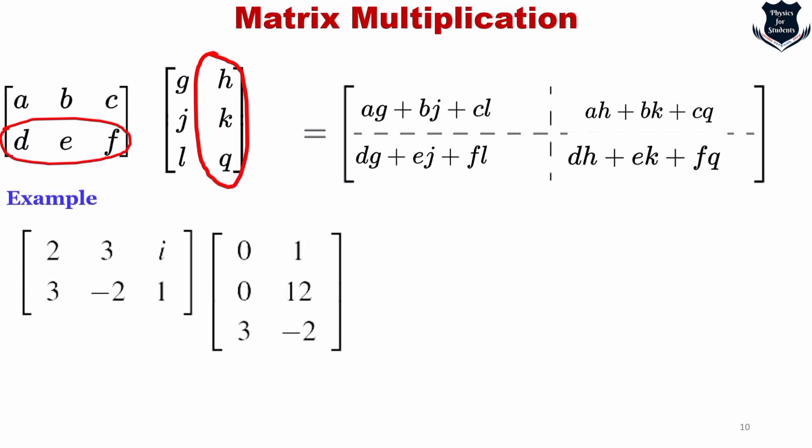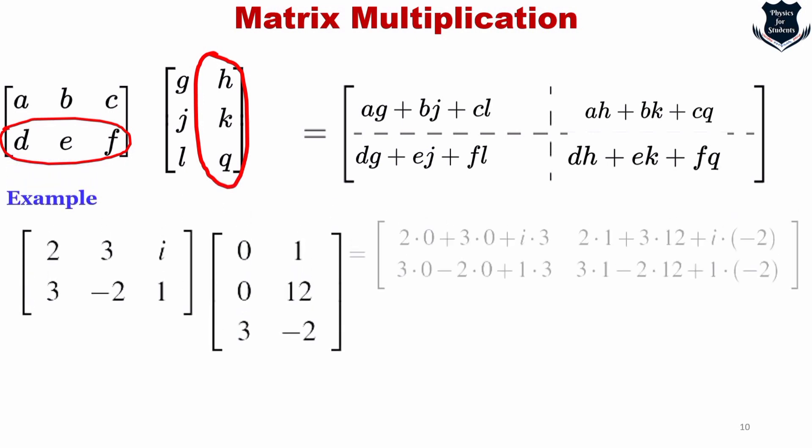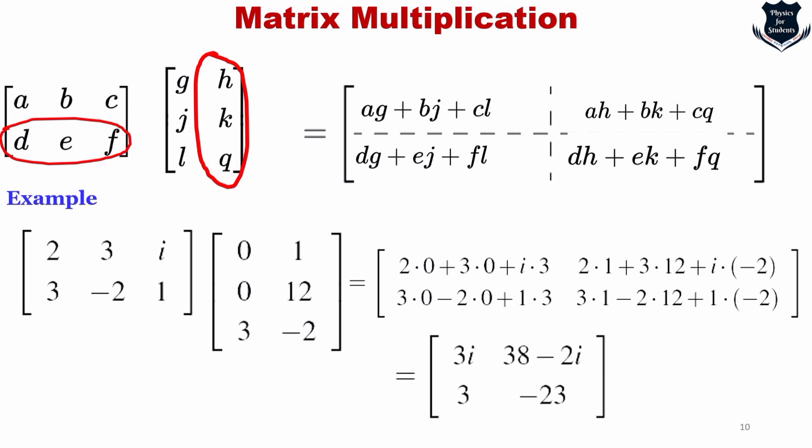Here is a further numerical example showing how the matrix multiplication results in specific values. We multiply 2 with 0, plus 3 with 0, plus i with 3, and then further with 2 with 1. Note that this i is the imaginary unit. I have given this example because I want you to feel that imaginary numbers do appear in quantum mechanics and that is how we work with them.